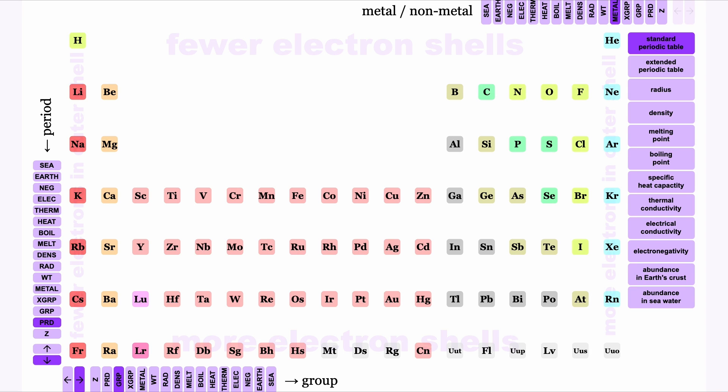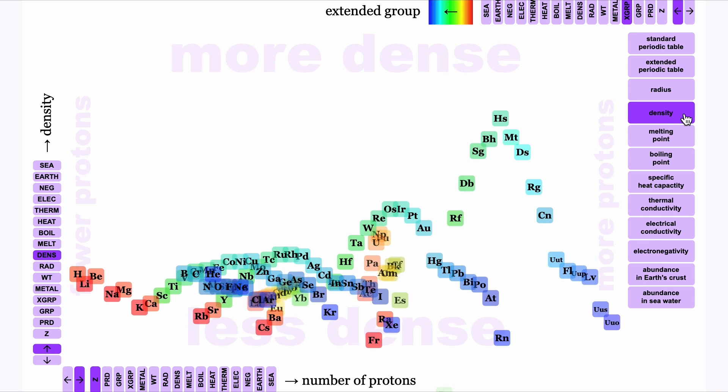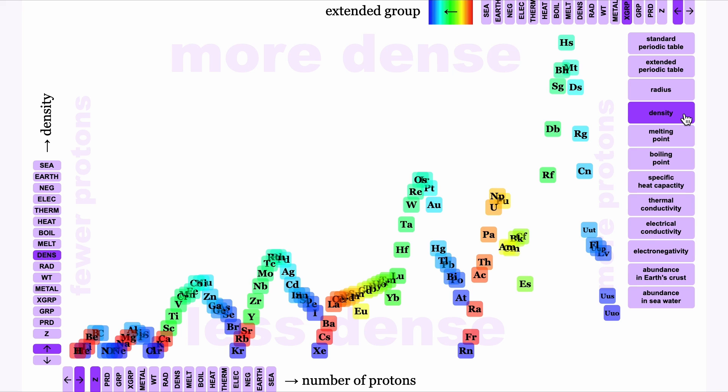Those aren't the only numbers we have for atoms — we have all those other numbers from Wikipedia too. If we can plot numbers of shells against numbers of electrons to give the periodic table, we can plot any number against any other number to give many other charts. For example, we can plot the density of an element against the number of protons in the nucleus of that element. Hidden in all those numbers on Wikipedia are patterns that are revealed only when we visualise the data.